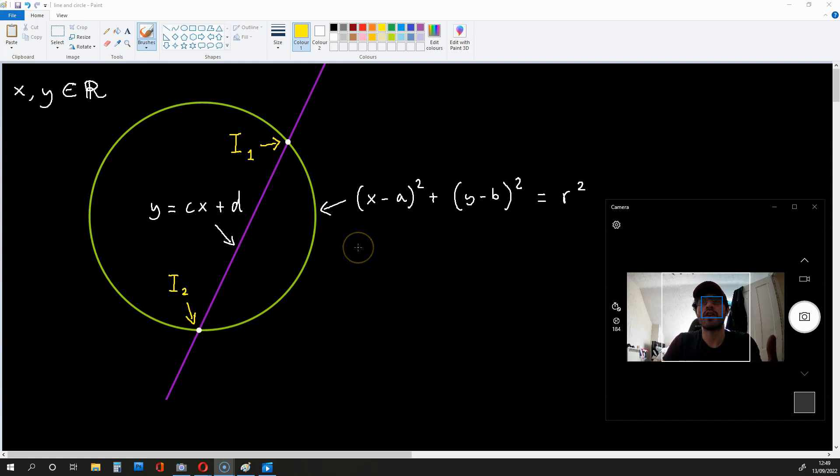The equation of a circle is going to be (x - a)² + (y - b)² = r². The center of this circle is going to have the coordinates (a, b), and its radius is going to be the size r. What we also have on this diagram is a line, and it is of the form cx + d. That is, y = cx + d.